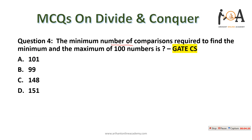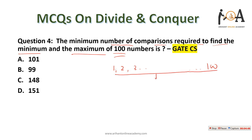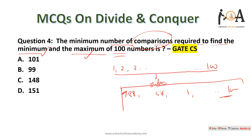The next question: the minimum number of comparisons required to find the minimum and maximum of 100 numbers — a very interesting question. Suppose 100 numbers are given to you in any order, like 9, 3, 8, 54, 1, and so on — total 100 numbers. What would be the minimum number of comparisons required to find both the minimum and maximum?